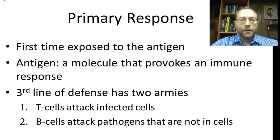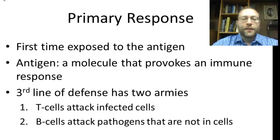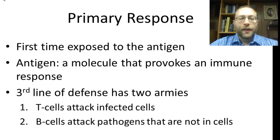The primary response is where you're first exposed to the antigen. An antigen is a molecule that provokes an immune response, and this molecule is usually a part of the pathogen — not the whole pathogen, just a part of it. The third line of defense has two armies: the T cells that attack infected cells, and the B cells that attack pathogens that are not in the cells. One army attacks infected cells and destroys them; the other goes after pathogens that are free-floating in the body.